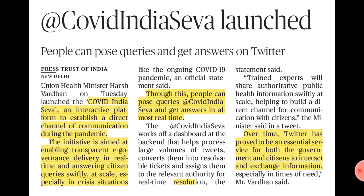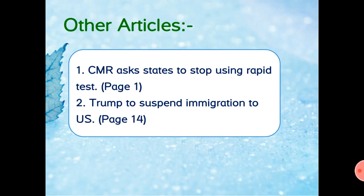Apart from the main articles, also go through two more: first, ICMR has asked states to stop using rapid tests, as data shows around 95% of rapid tests are giving wrong results — showing negative even when samples are positive. Second, Trump has announced suspension of immigration to the US — another protectionist policy to provide job security for locals under his America First agenda.